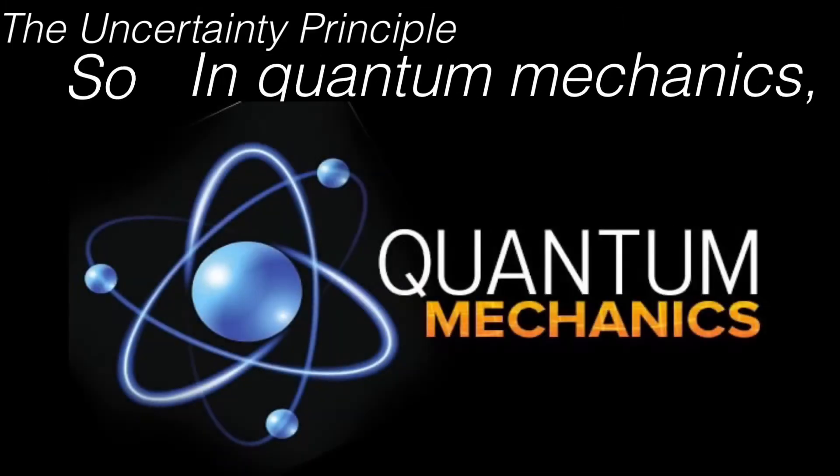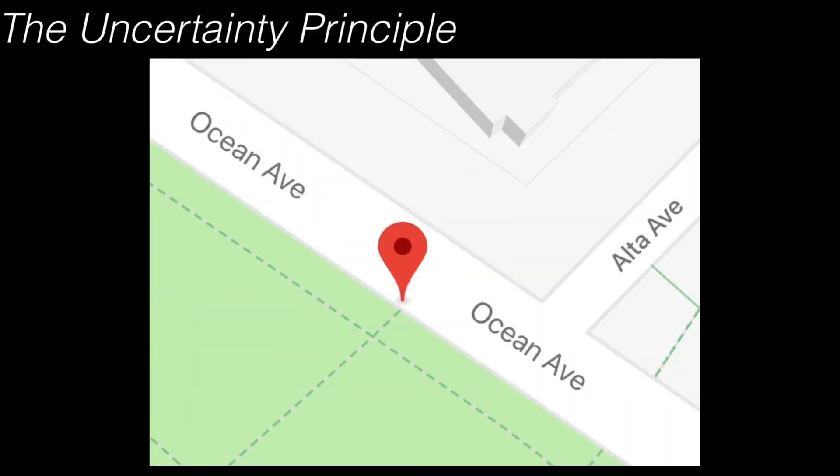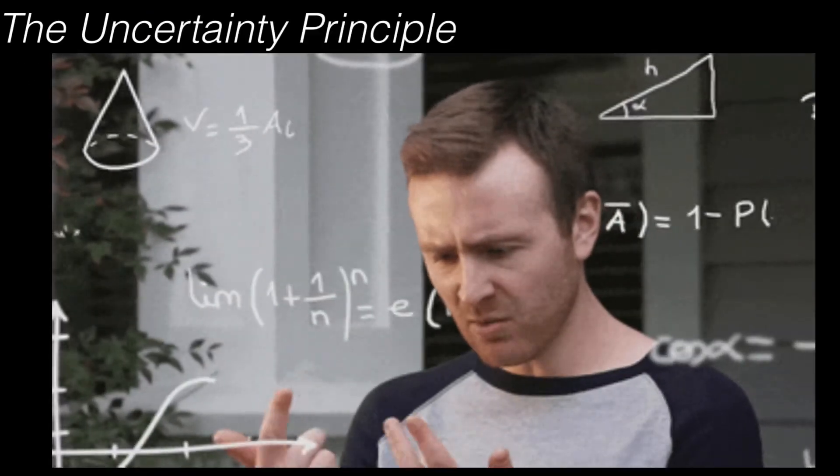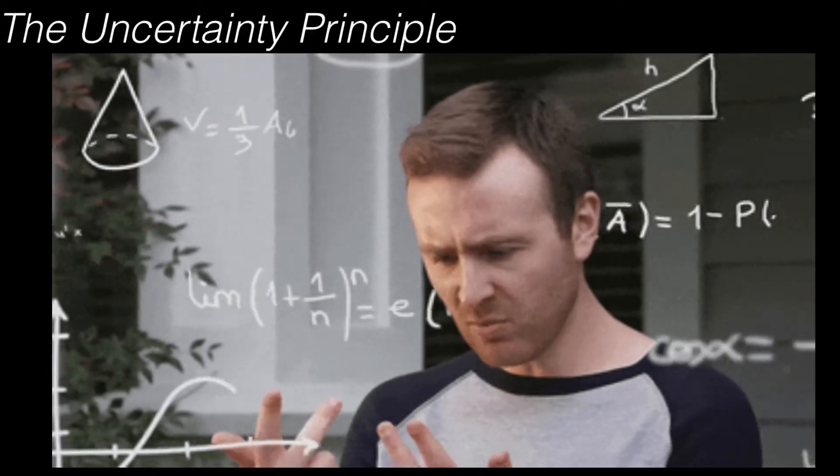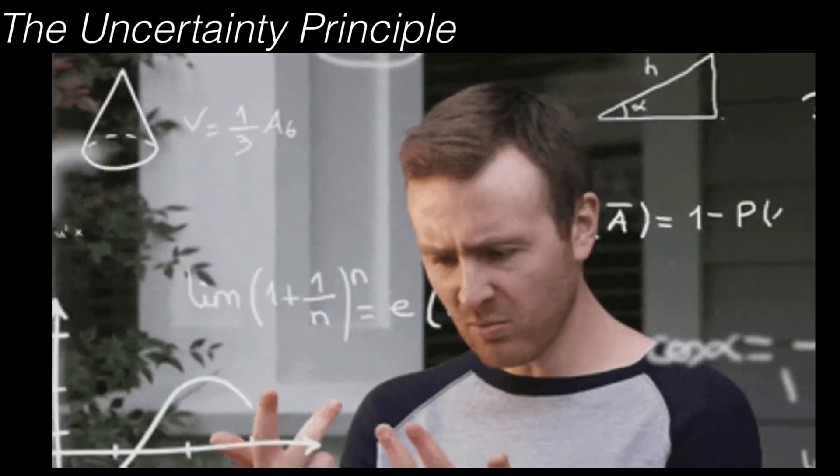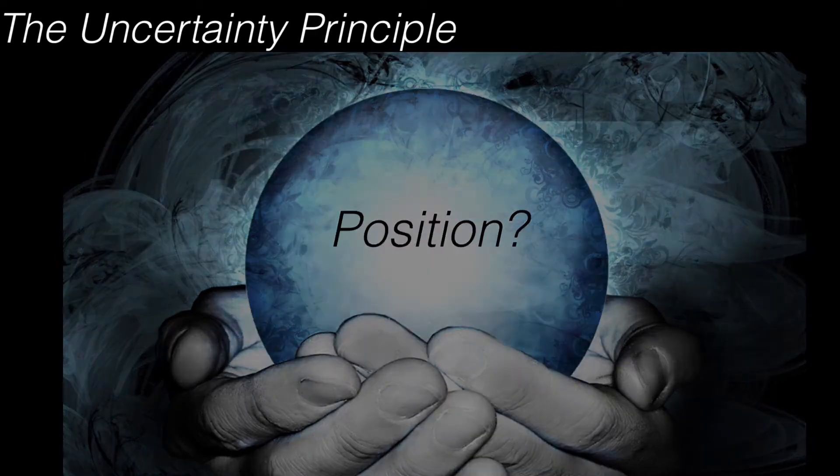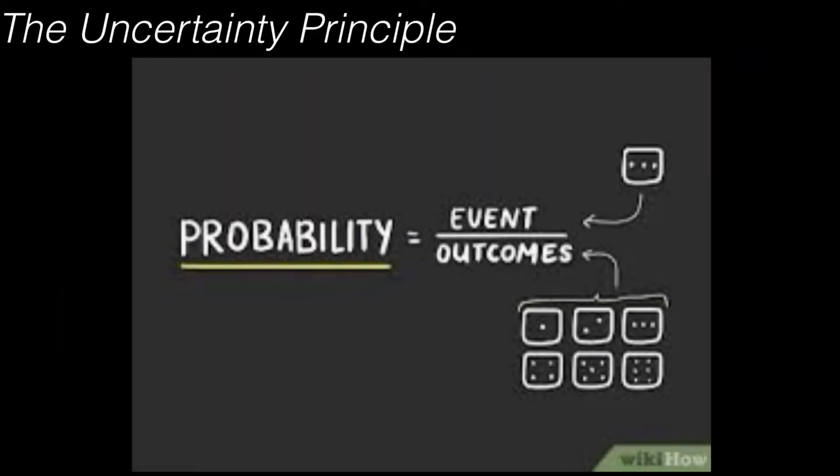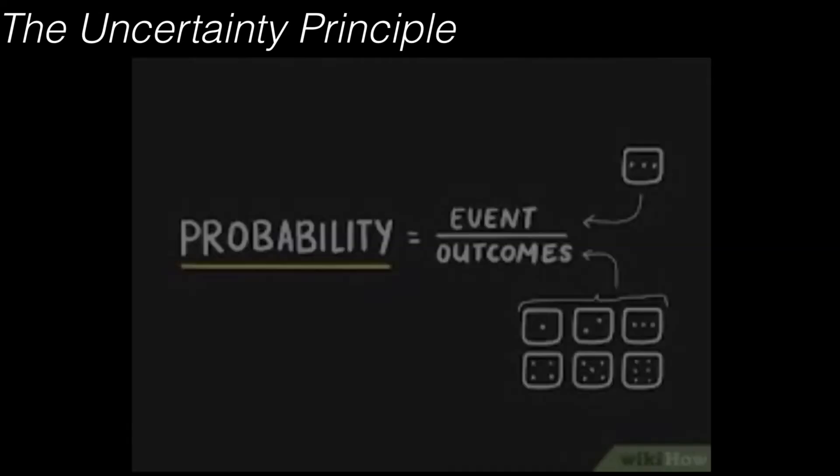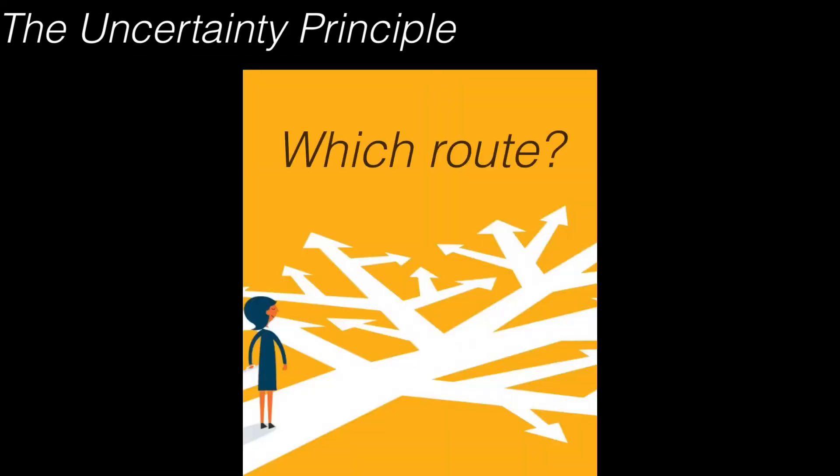So in quantum mechanics, if you know the person's current location, you're not able to tell where he's coming from in the past or where he's exactly going in the future. So in order to predict where he can be in 10 units of time, you have to use something called probabilities, because you're not 100% sure where he will be.